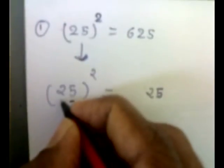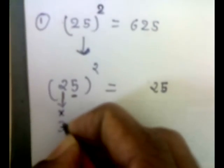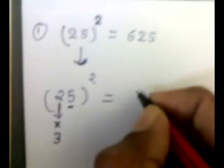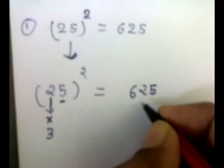Right, and now multiply this 2 by the very next number to 2. That is 3. So 2 multiplied by 3 is 6. We'll put 6 here. So in this way 25 square is 625.